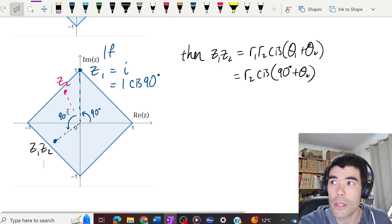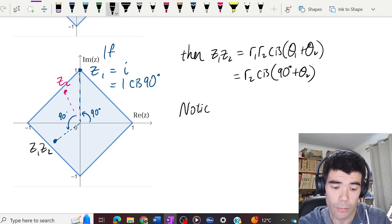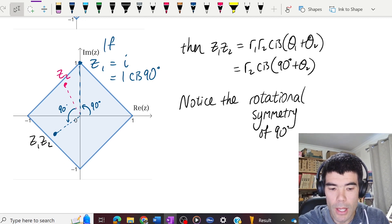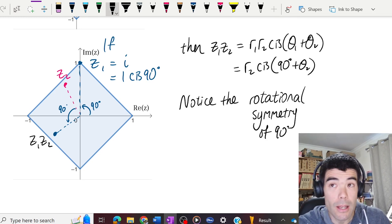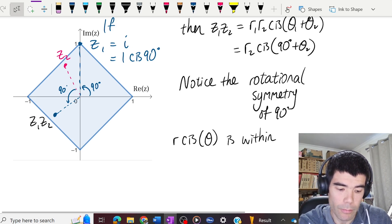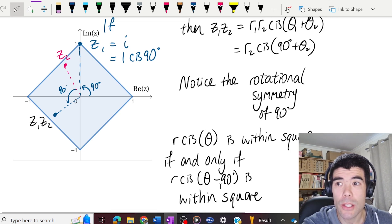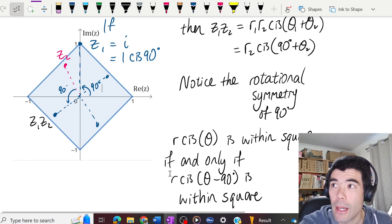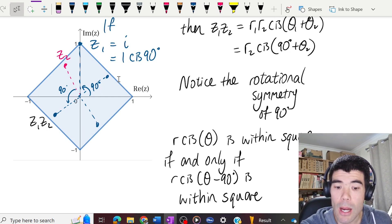So looking at that, what we can see is the product there is exactly the same distance away from the edge of the square as z2 was, because we've just rotated around by 90 degrees. And the square is actually rotationally symmetrical by 90 degrees, we could rotate the square by 90 degrees, and you wouldn't know anything had happened. So we can say for example that whether r cis θ is within the square is going to be exactly the same as r cis θ plus 90 degrees.